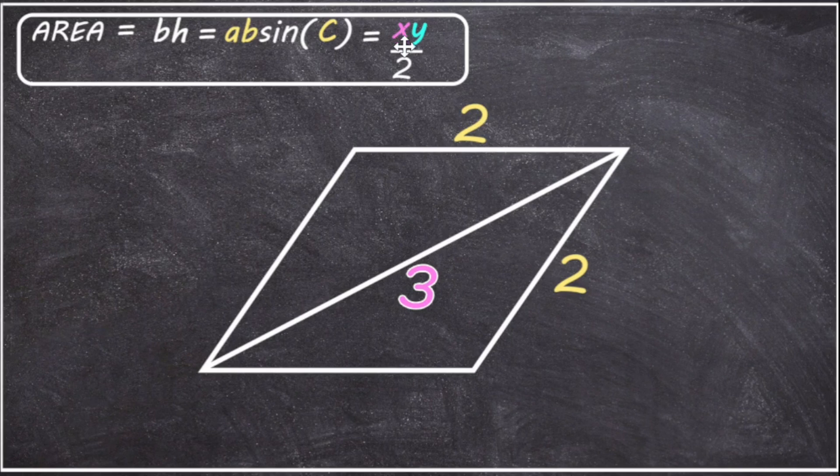And if we try to use X times Y divided by 2, well we only have one of the diagonals, so that would prevent us from using this formula directly. So because we can't use any of these three formulas directly, we're going to have to find a workaround first. So let's see how we can do that.